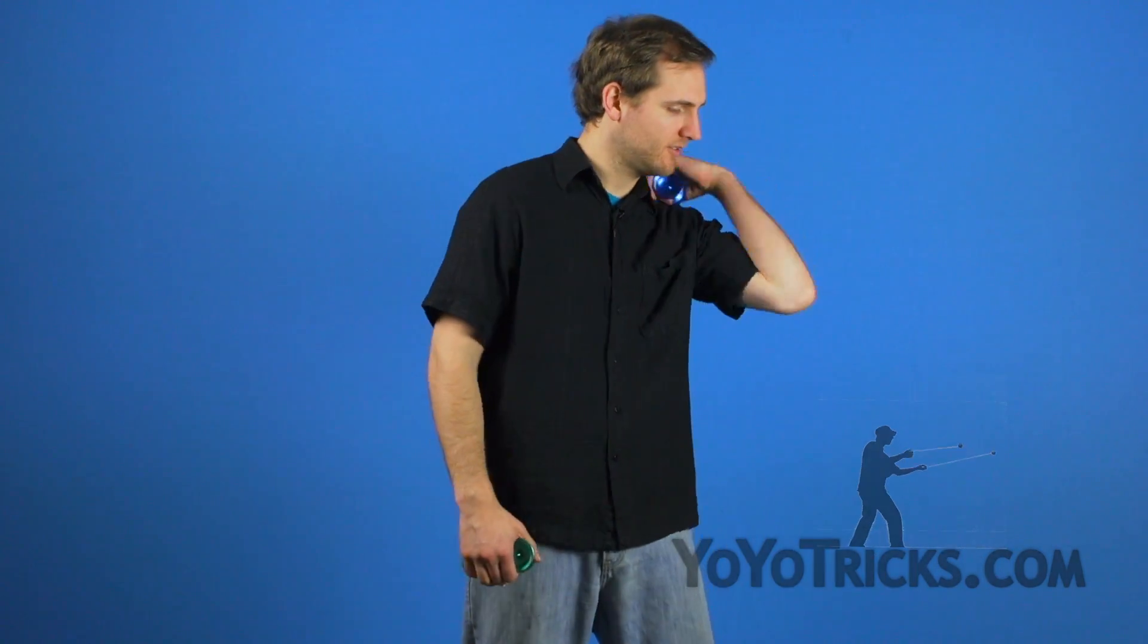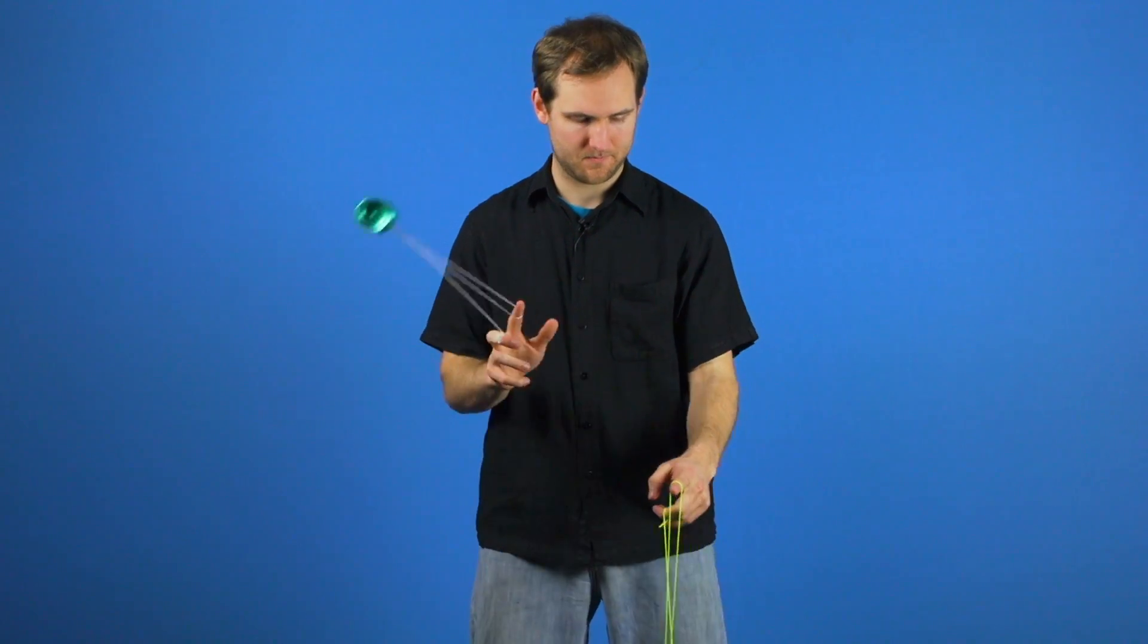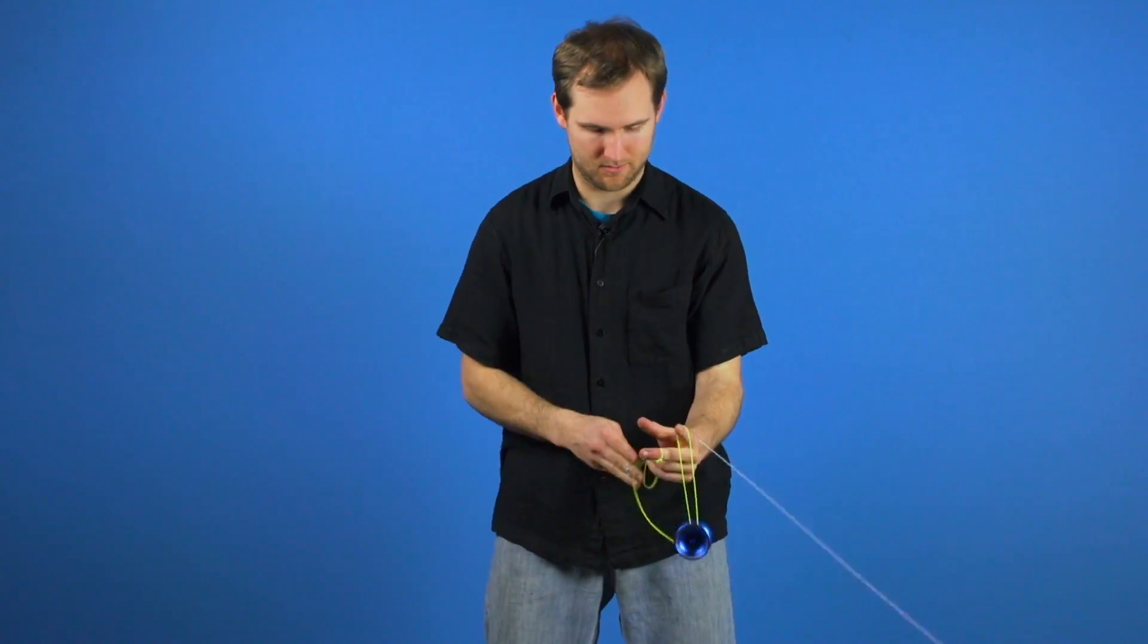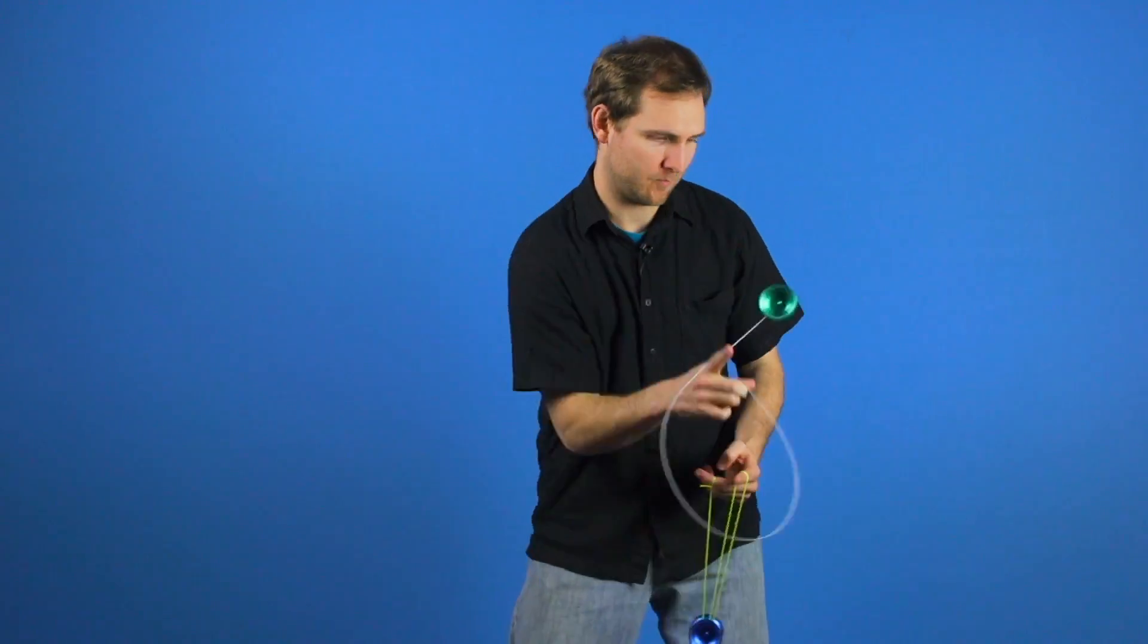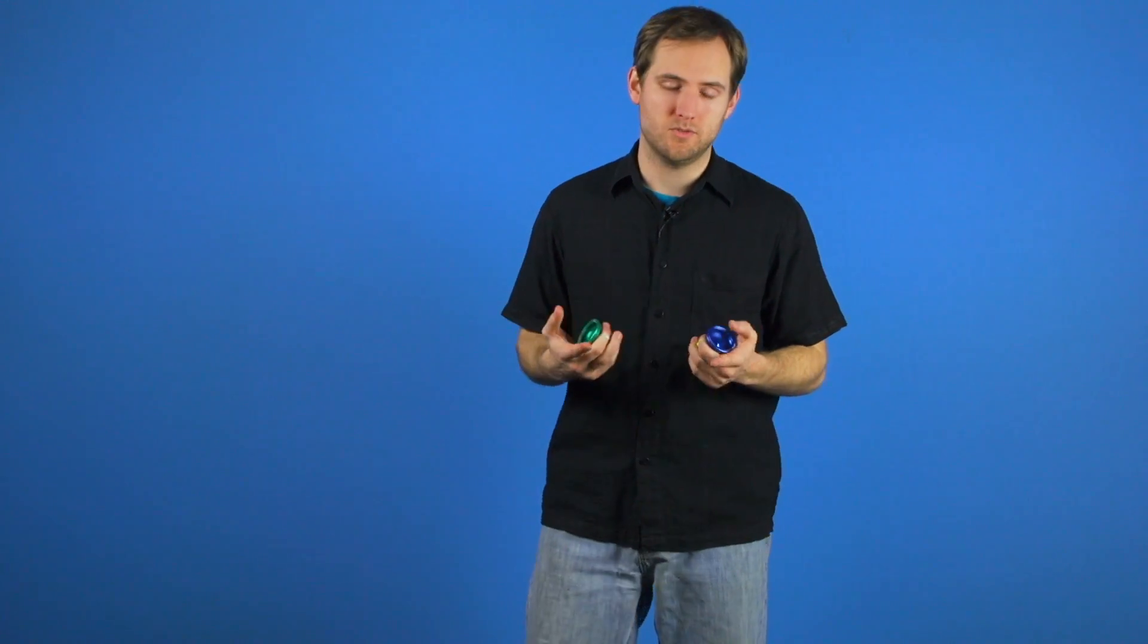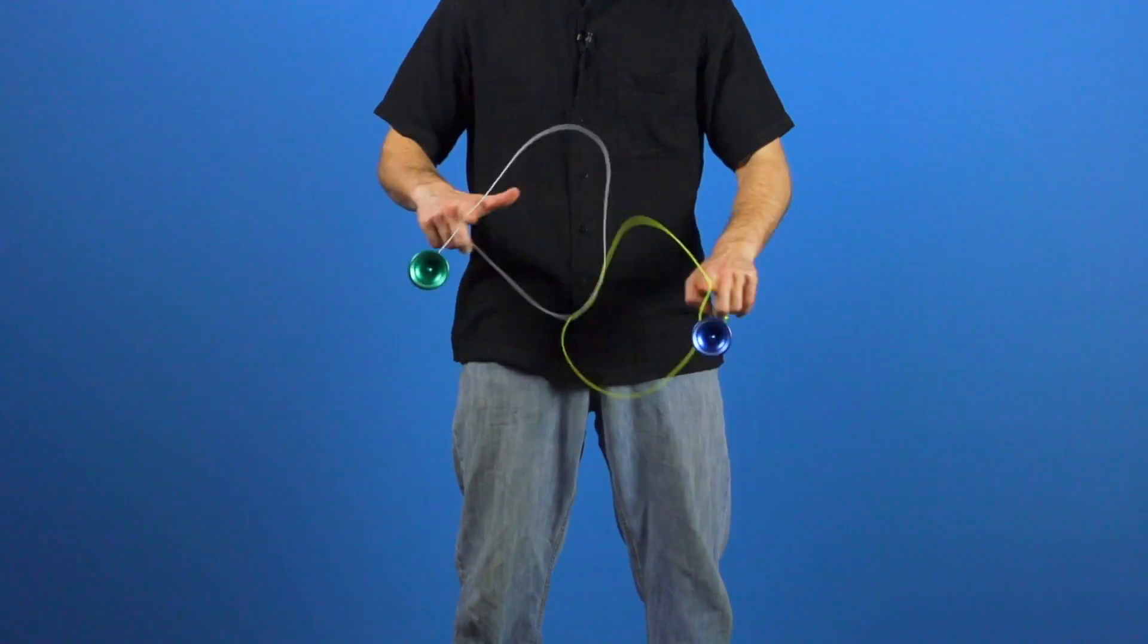This trick is called Devil's Snare. It looks like this. Now to do this trick, you're going to start off by doing a Gunslinger to the inside with both hands. Make sure you know how to do that trick, so check out our video on Gunslinger Whips.